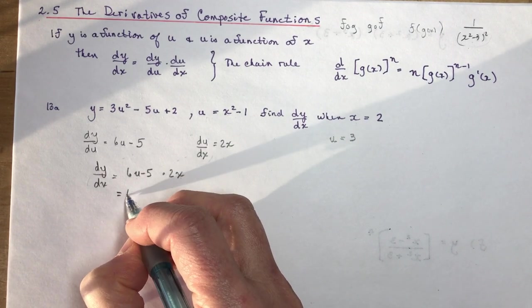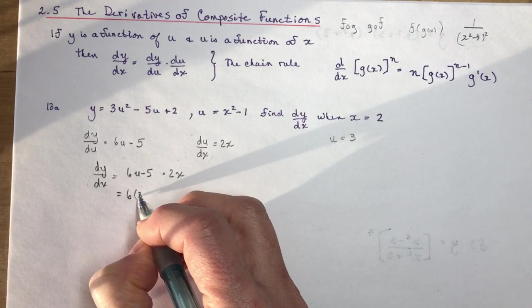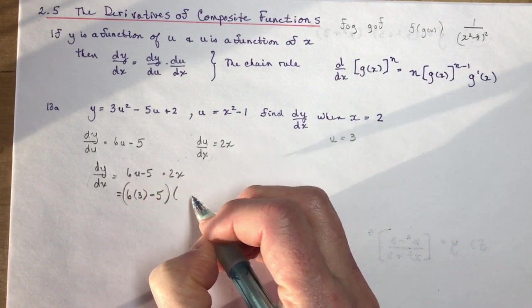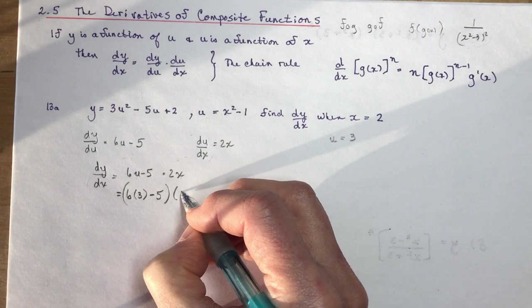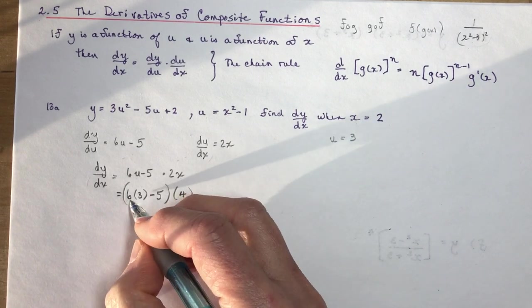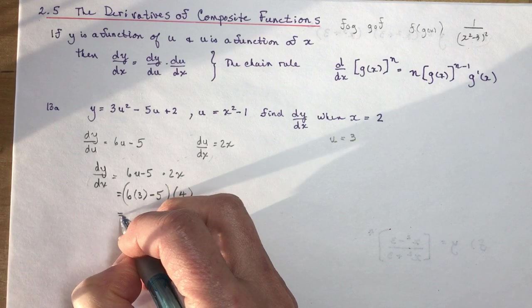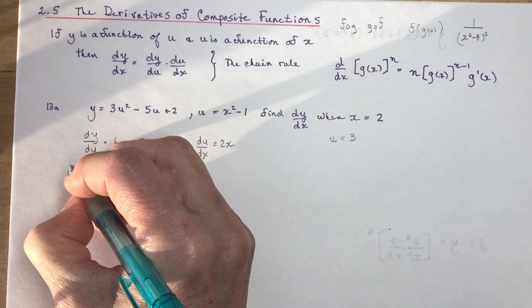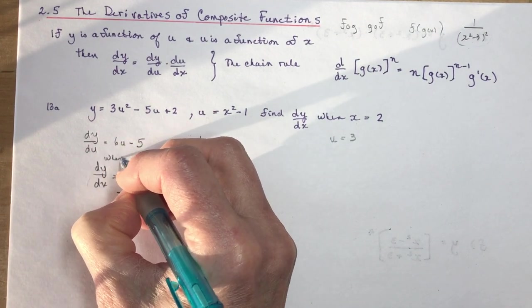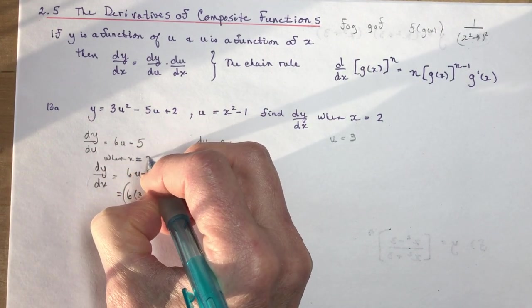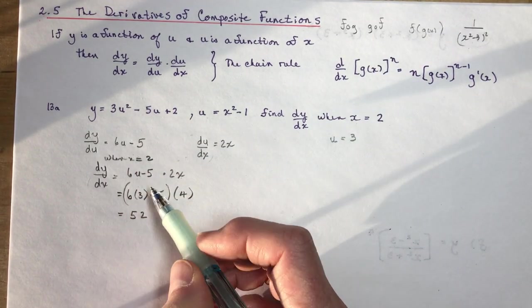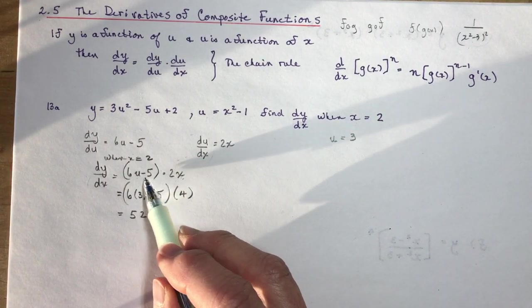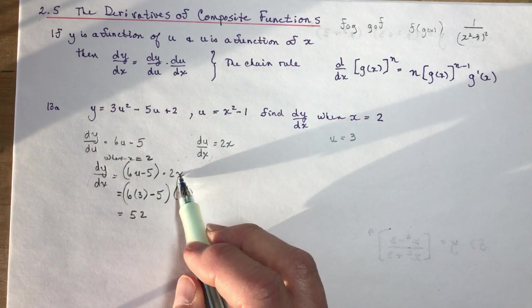So dy/dx is going to be 6(3) - 5, in brackets, times 2(2). So 2 times 2 is 4. So 18 - 5 is 13, and 13 times 4 is 52. So dy/dx, and I probably should have written in here, when x equals 2, dy/dx equals 6u - 5 times 2x. And I plug in the u being 3 and the x being 2.